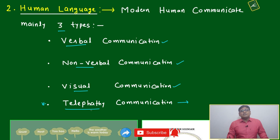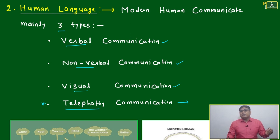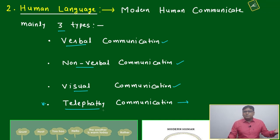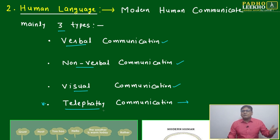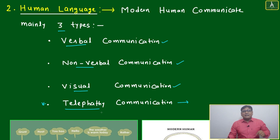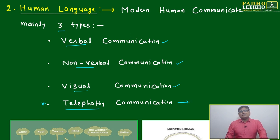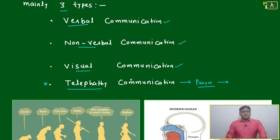It depends on our own preparation — how much we can prepare ourselves for telepathic communication. You will read in many books about telepathic communications: one person loves another, the relation may be mother-son, brother-brother, brother-sister, or husband-wife — they are at two different geographical locations. One person is in trouble, and the other person in a very deep, calm state is praying for them, and that signal is recognized and works out.